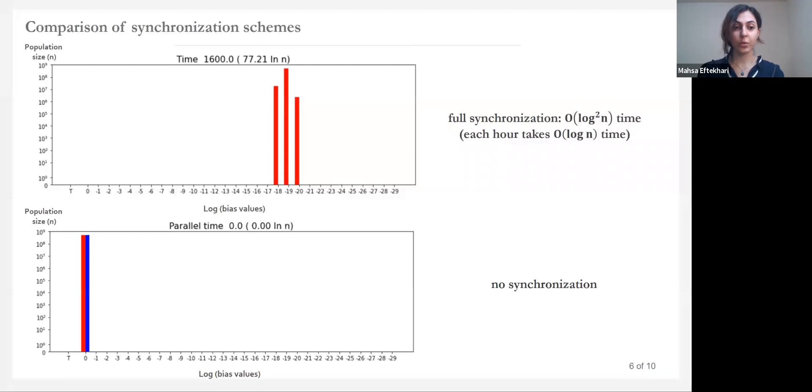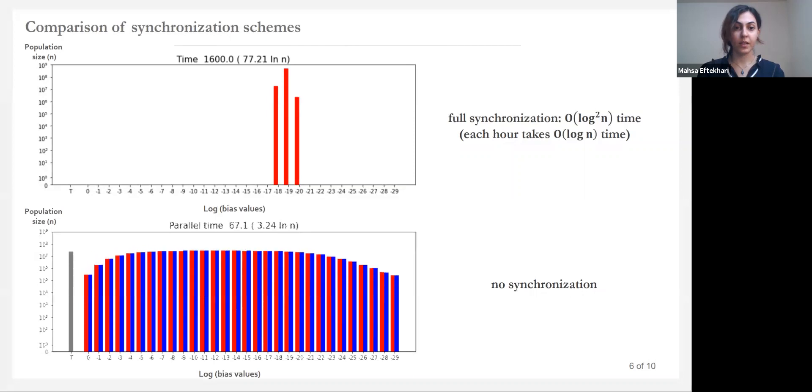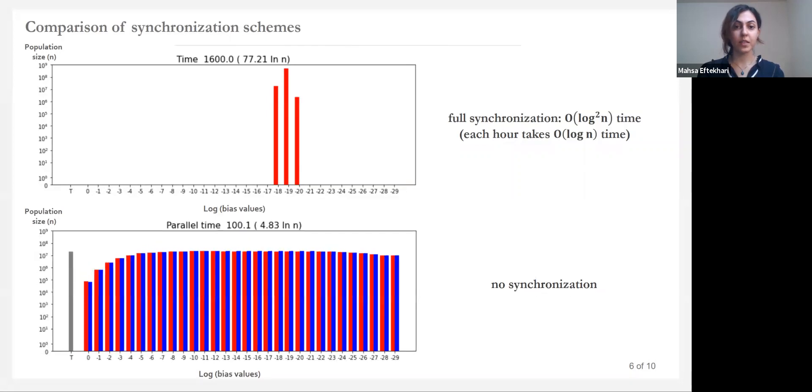It is natural to question if synchronization is necessary or not, if we can achieve a faster computation by avoiding these rigid synchronized hours that allow agents to split only once in each hour. Now, as we see in this simulation, with no synchronization scheme, all the bias values appear quickly among the population, which slows down the protocol since we should wait for the scheduler to pick two agents with the same bias value to cancel.